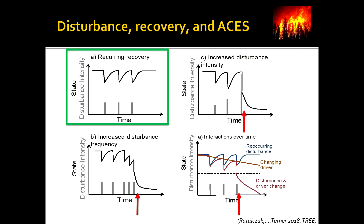The second thing I'm going to emphasize is the interaction between disturbances and other drivers. If we think about disturbance recovery and abrupt change, the green diagram in the upper left shows that many ecosystems are well adapted to their natural disturbance regime, having experienced it throughout the Holocene. If disturbance events occur, the system recovers and knows how to do this, usually without intervention. However, increases in the frequency of disturbance — such that they reoccur before the system has had a chance to recover — can cause an abrupt change. An increase in the intensity of disturbance, such that we lose some of the ecological memory or legacy, can also cause an abrupt change.